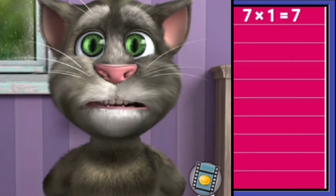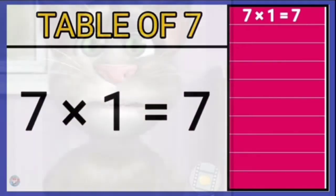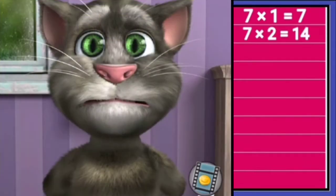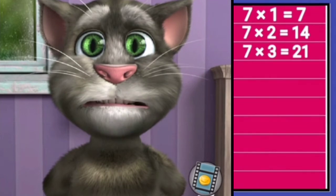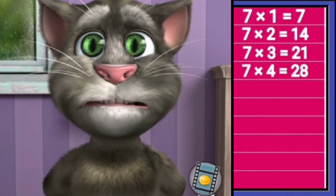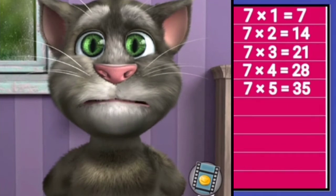Table of seven. Seven ones is seven, seven twos is fourteen, seven threes is twenty-one, seven fours is twenty-eight, seven fives is thirty-five.